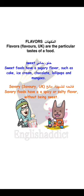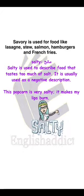The second flavor is savory. كتابة savory تختلف بريطاني عن الأمريكي — نفس الحركة، نضيف يو للكتابة البريطانية. Savory foods have a spicy or salty flavor without being sweet. Savory عكس sweet، يعني ما تعني إنه الأكل مالح بس، بمعنى إنه الأطباق فاتحة للشهية. Many people say salty food when they mean savory food. Savory is used for foods like lasagna, stew, salmon, hamburgers, and french fries.